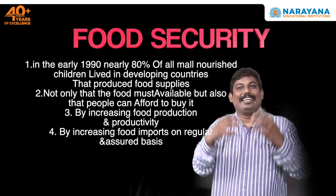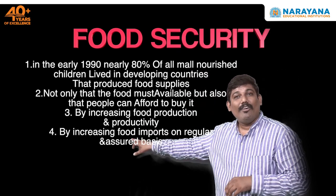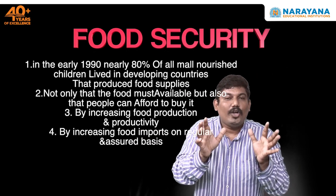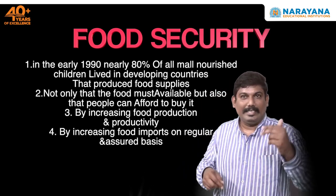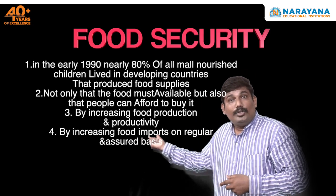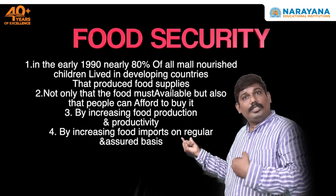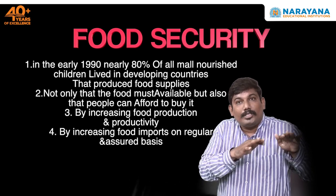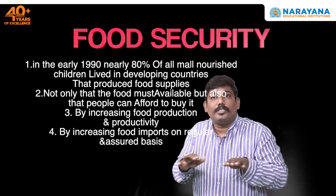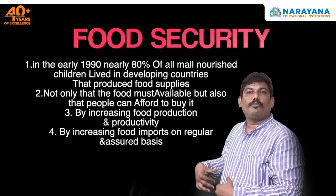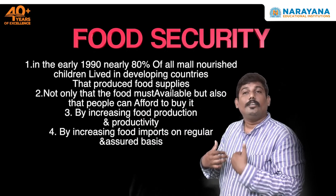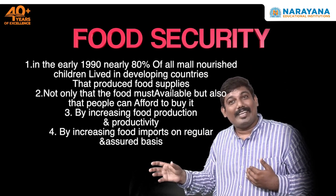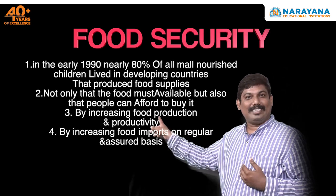People can get food security through increased food production. Fourth point: by increasing food imports on a regular and assured basis. If food is not produced here in sufficient quantity, we can import it from other places. Based on the scenarios, we can import food production as needed. If we import, we can overcome the shortage and provide food security to the people.